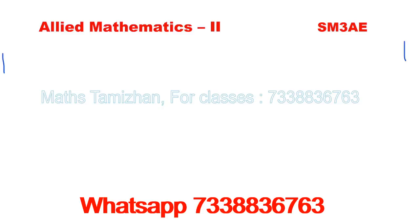Thank you for joining Unit 2. In this unit we will cover the Bernoulli formula, the reduction formula, and the Fourier series. For the Fourier series, you will have 10 marks — if you apply the formula it will be straightforward. We also cover vector integration, and Gauss, Stokes, and Green's theorems. Applying those formulas will give you around 4 to 5 marks.